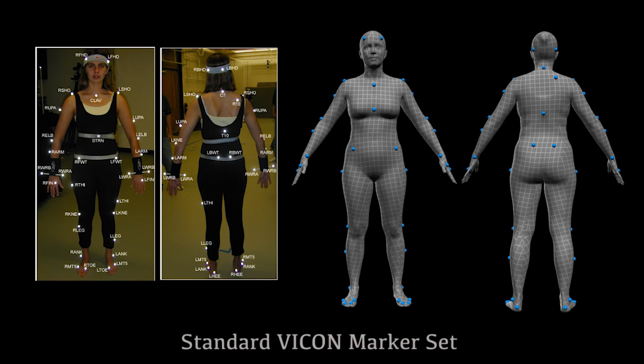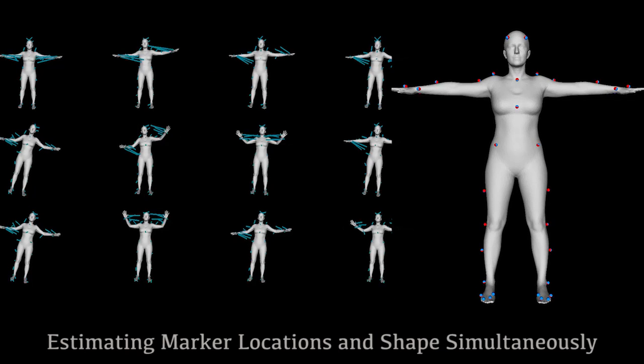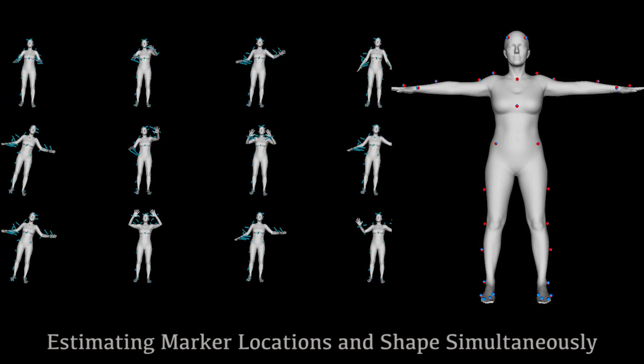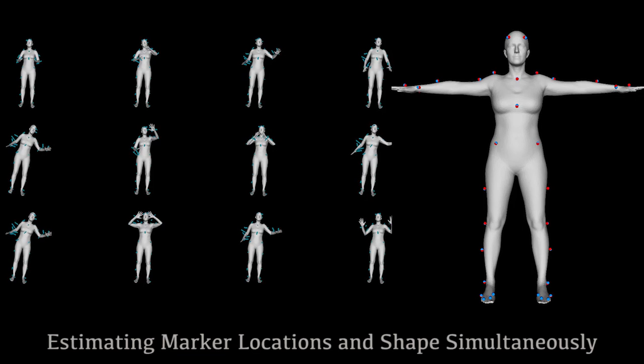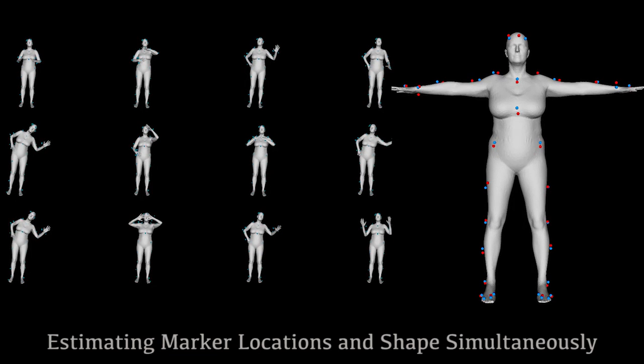MOSH automatically estimates precise marker locations on the body from a mocap sequence. We roughly place the markers in blue on a template body, then jointly optimize body shape, pose, and marker locations. Body shape is represented by a shape model that can capture a wide range of body shapes and poses.